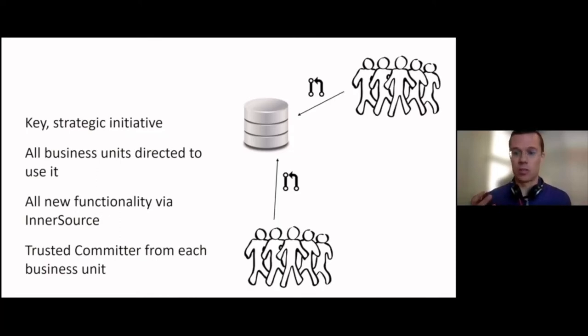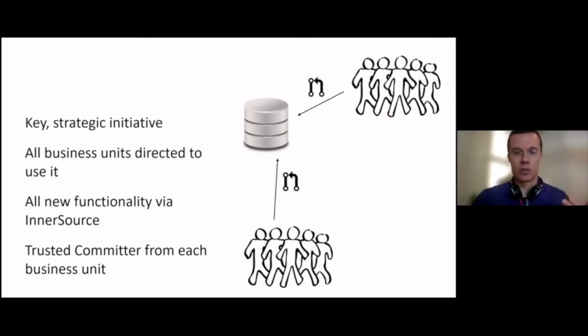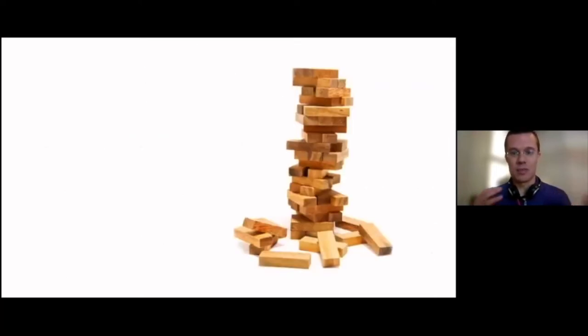And people started contributing, business units started onboarding to the project. And more started coming on. So this project got a whole lot of activity. So there's a lot here that's set up for success. There's support in terms of senior leadership, support in terms of trusted committer. But even with all this support and interest and involvement in InnerSource, we still noticed a little bit of instabilities as project was being built out. As things went on, we started encountering some difficulties toward the project meeting its goals.